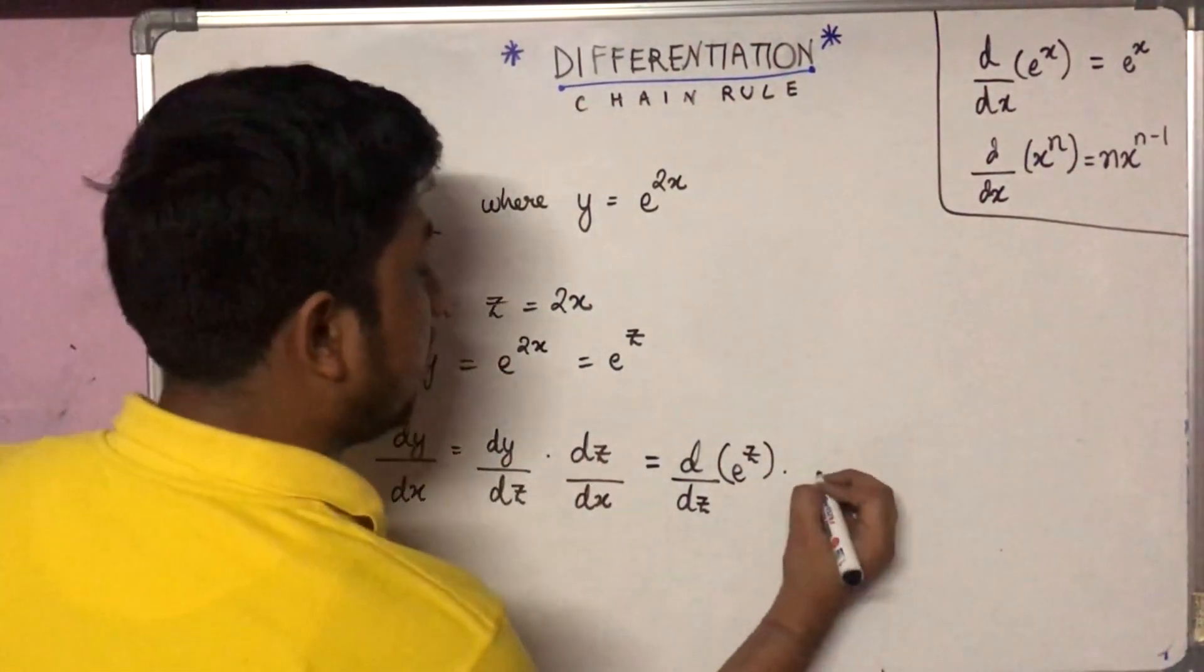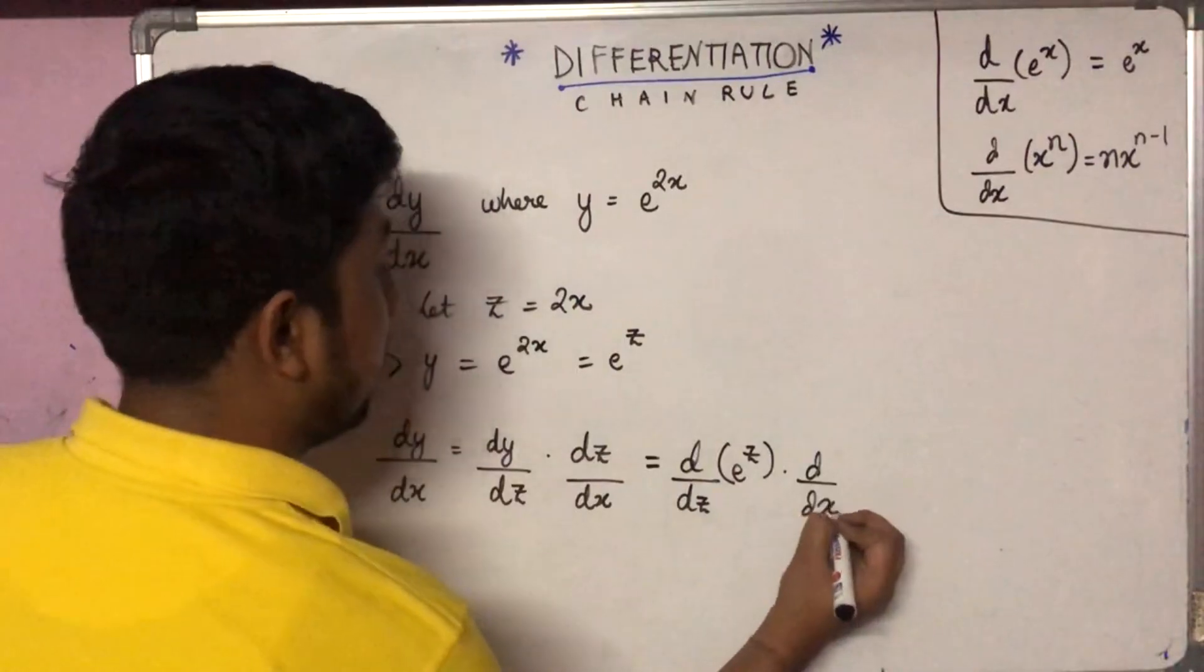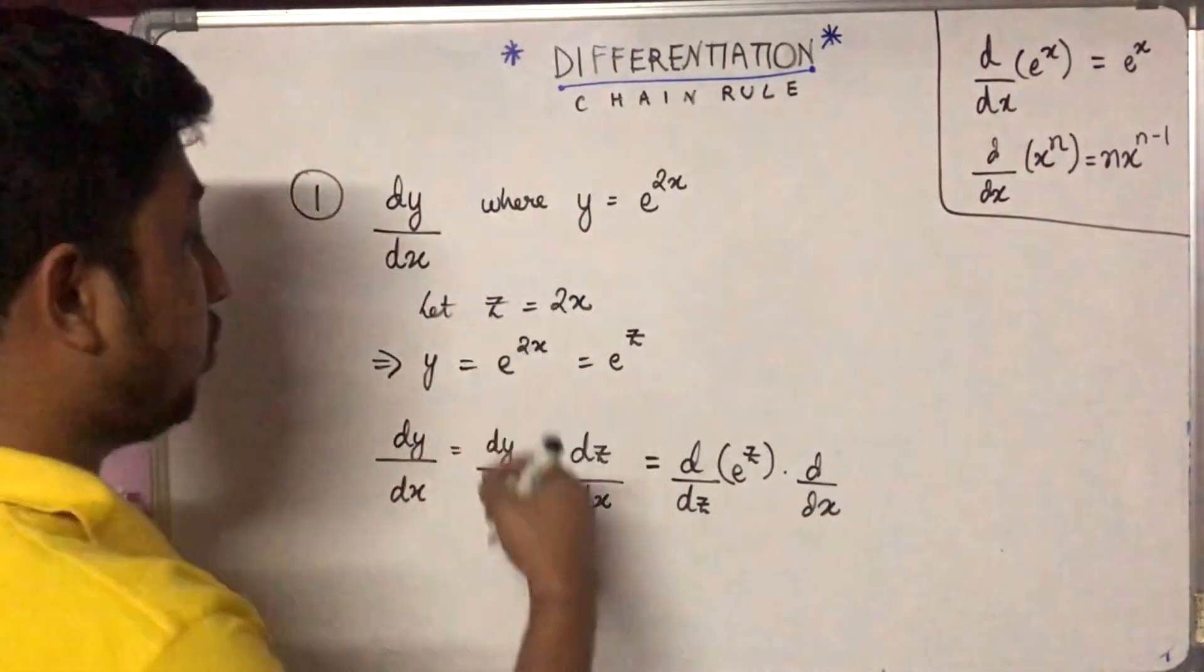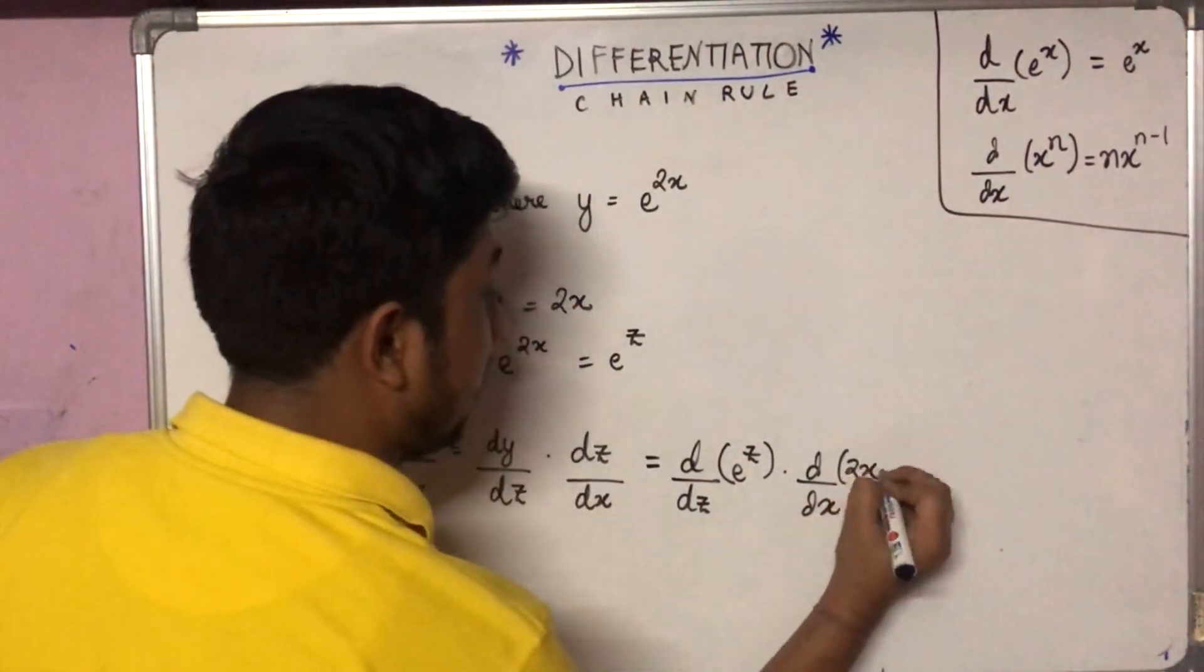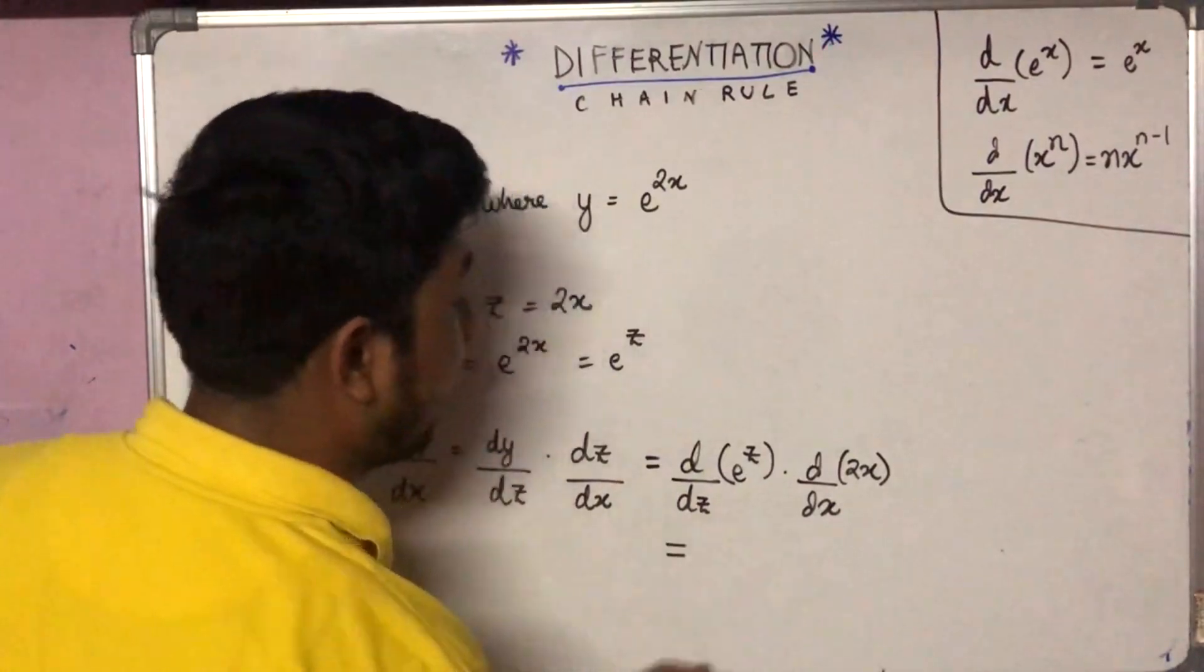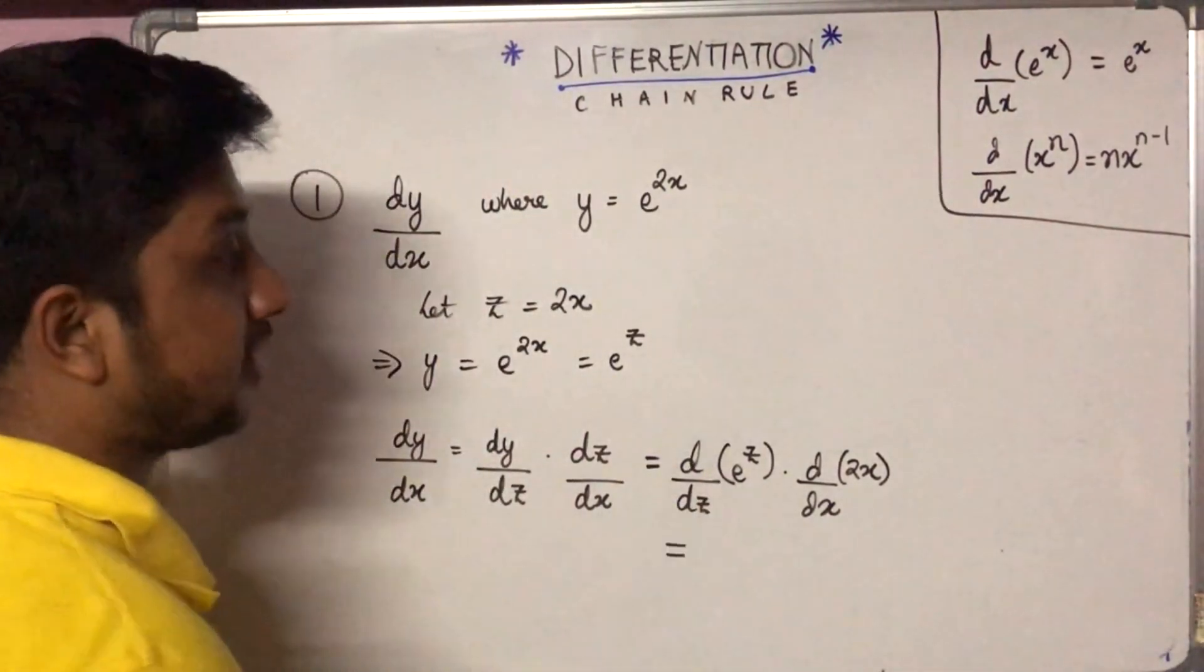That means d/dx of z, which is 2x. So here we have d/dz of e to the power z.